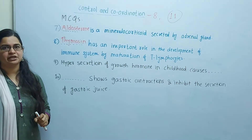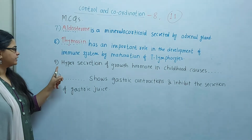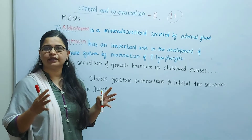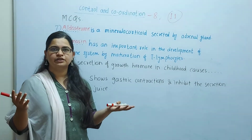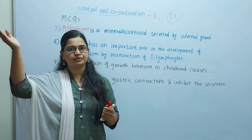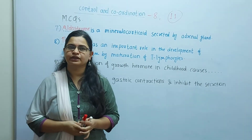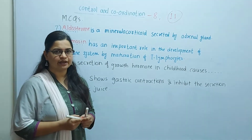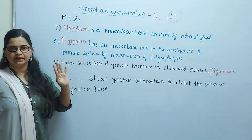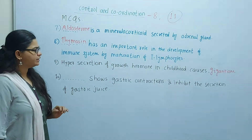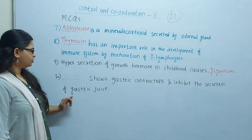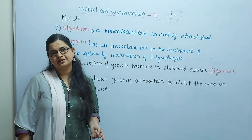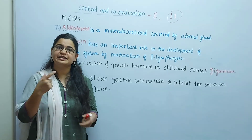The next question is about hypersecretion of growth hormone in childhood — what will happen? That is the correct option for this one. The next question: what shows gastric contractions and inhibits the secretion of gastric juice? Remember, this is related to the digestive system and specifically the stomach.